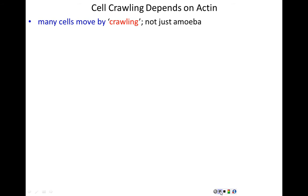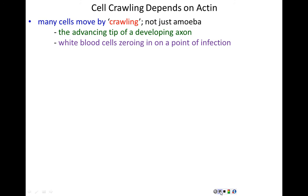Some examples are the advancing tip of a developing axon — the axon growth cone — which moves forward in this crawling manner. White blood cells, cells of the immune system that are attracted to and home in on a point of infection so that they can engulf a foreign pathogen, also move by this crawling mechanism.